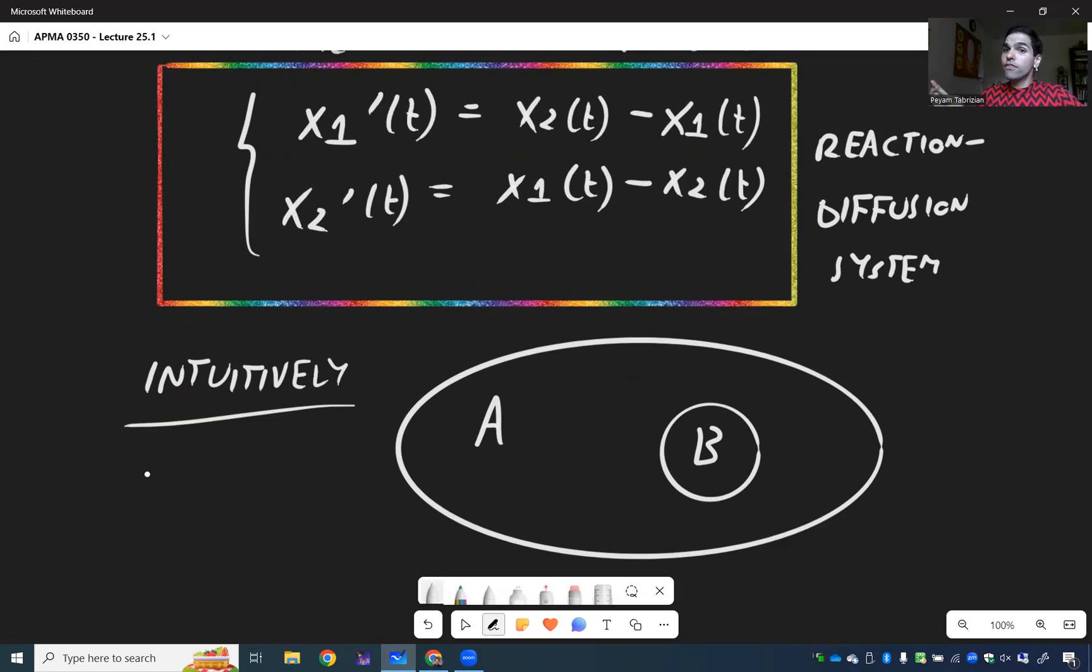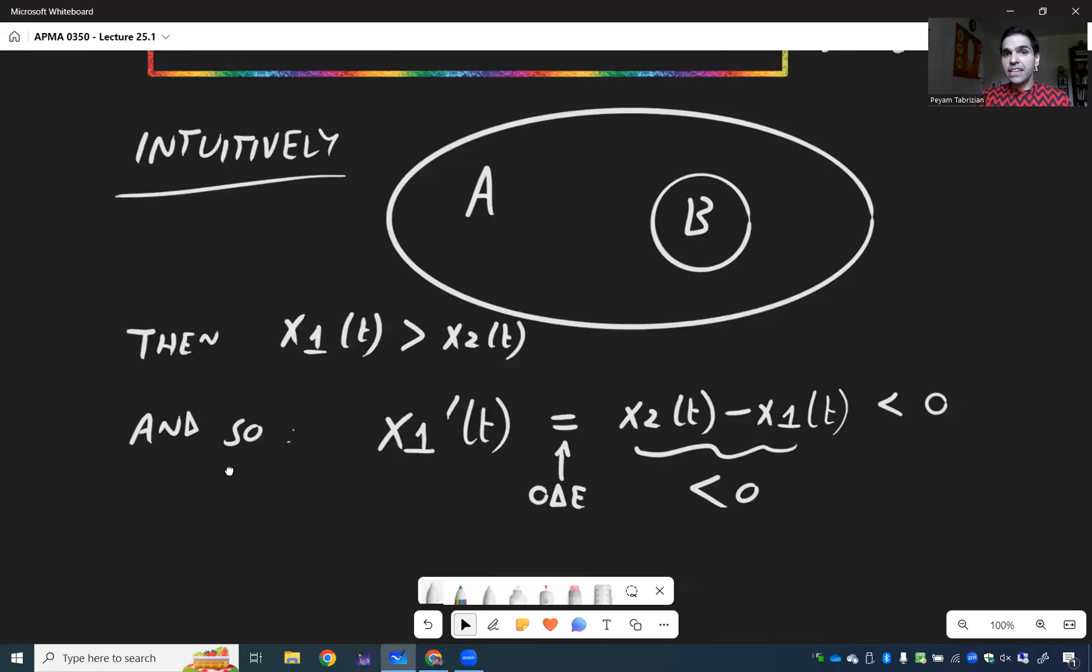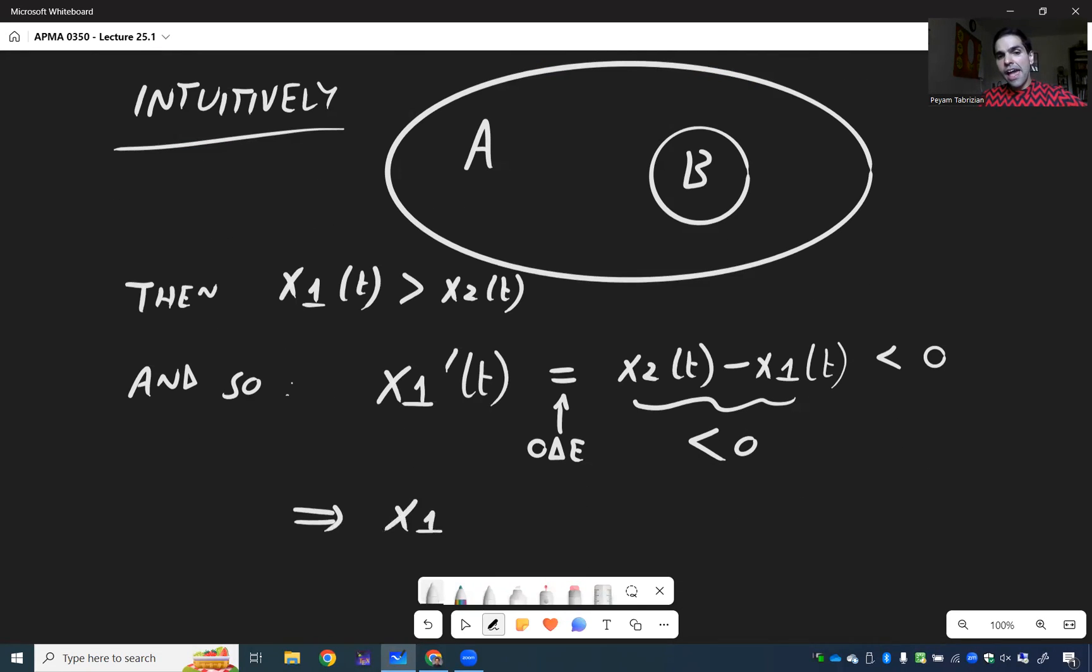So if you have such a compound then there's more A than B so X1 of T is bigger than X2 of T and so the differential equation is saying how does A evolve? So how does the concentration of A evolve? Well X1 prime by the ODE becomes X2 minus X1 which if there's more A than B then B minus A is negative so this whole thing would be negative in this case and so X1 prime is negative and therefore this causes X1 to decrease